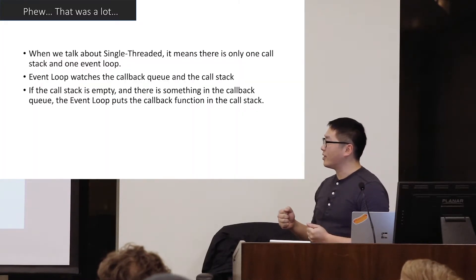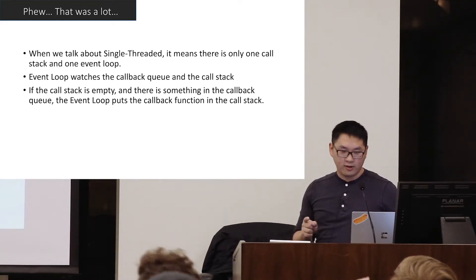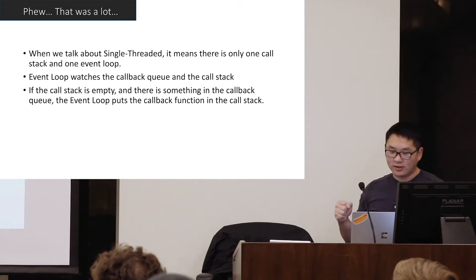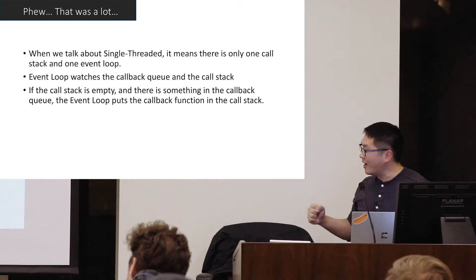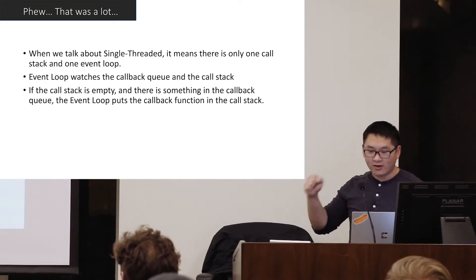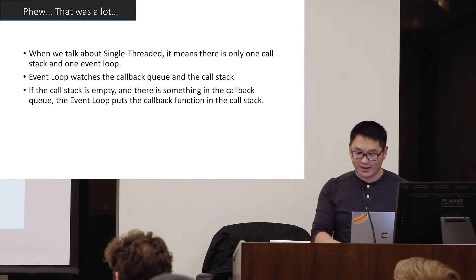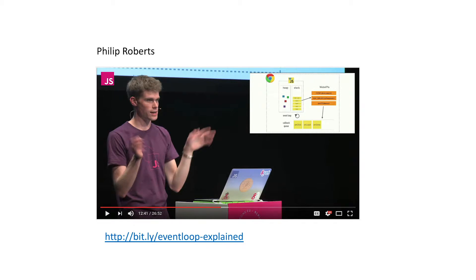Just to reiterate: when I say single-threaded, I mean the program has only one call stack and one event loop. The event loop watches the callback queue and the call stack, and will only put a callback from the callback queue into the call stack if the call stack is empty. I highly encourage everyone to watch a talk on YouTube by Philip Roberts — it's a fantastic talk with even crazier animations.